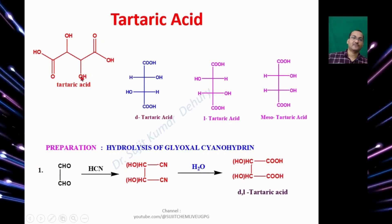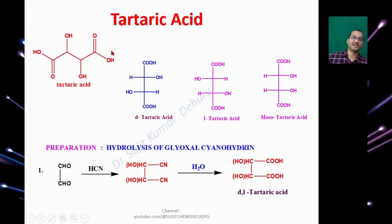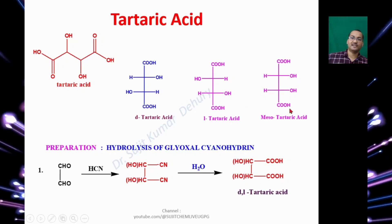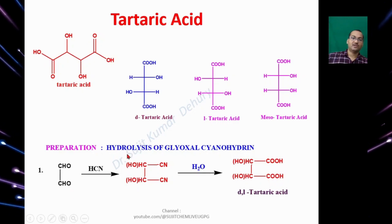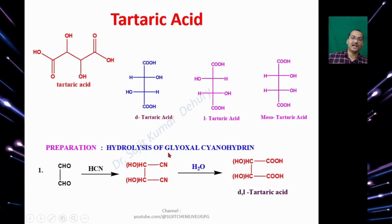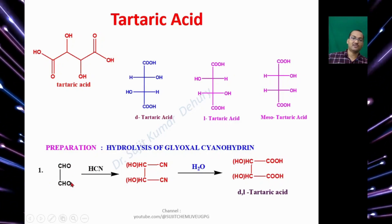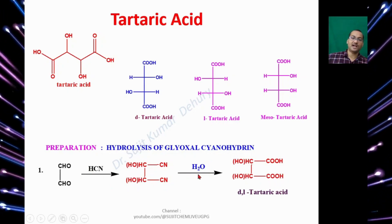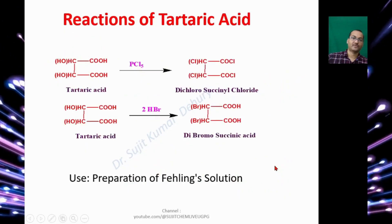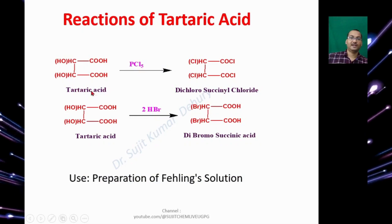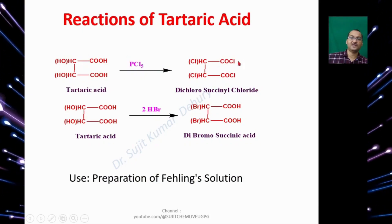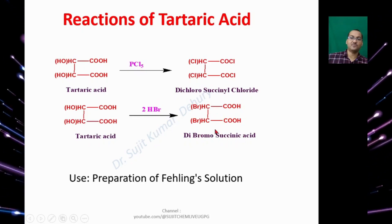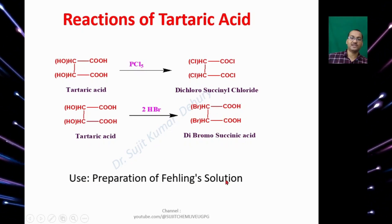Tartaric Acid is a dihydroxy dicarboxylic acid. There is a D form, an L form, and Mesotartaric Acid. Tartaric Acid can be prepared by hydrolysis of Glyoxal Cyanohydrin — Glyoxal reacts with HCN to give the cyano derivative, which upon hydrolysis gives DL-Tartaric Acid. Tartaric Acid upon reaction with PCl₅ gives dichlorosuccinyl chloride, and with HBr gives dibromosuccinic acid. It is used in preparation of Fehling's Solution.